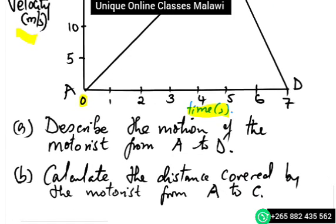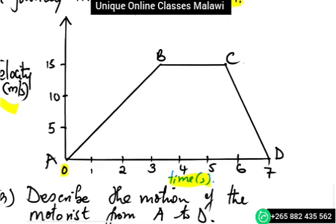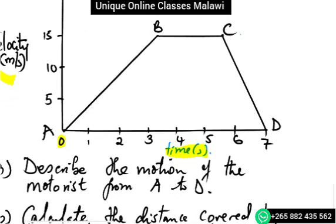Now we should describe the motion of the motorist from A to D, and we should find the distance covered by the motorist from A to C. Let me draw the diagram.